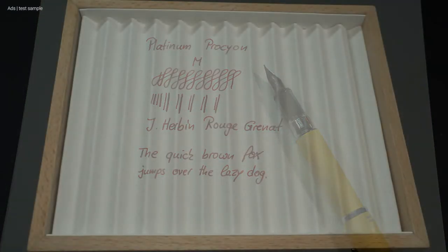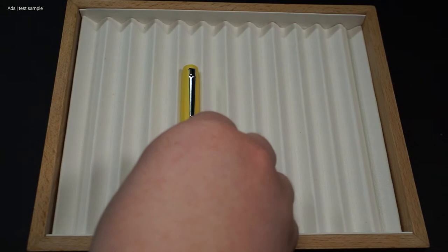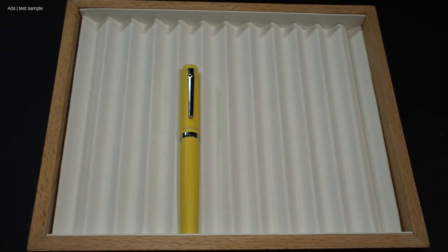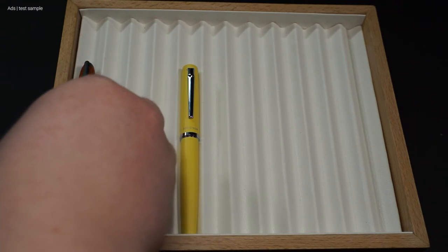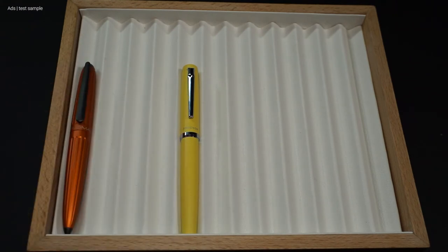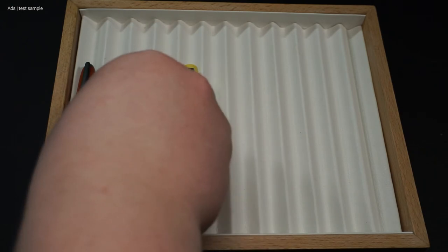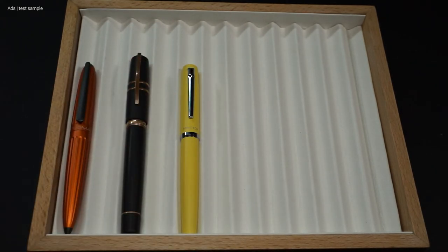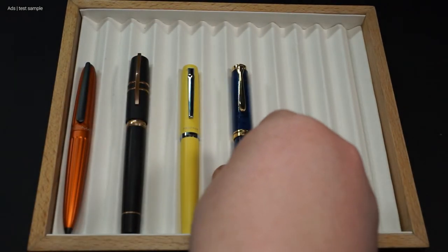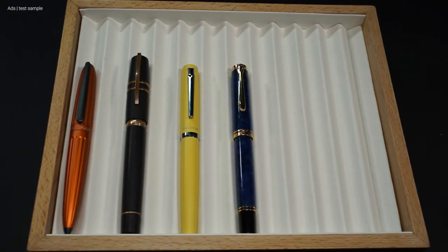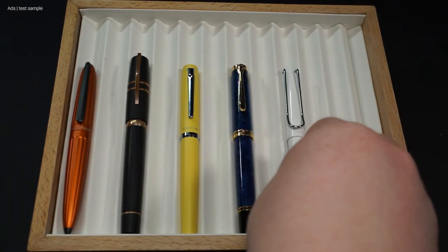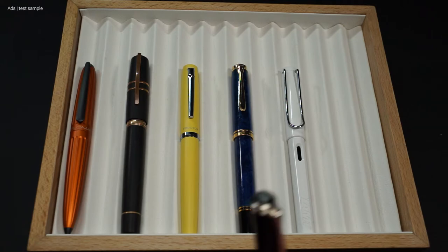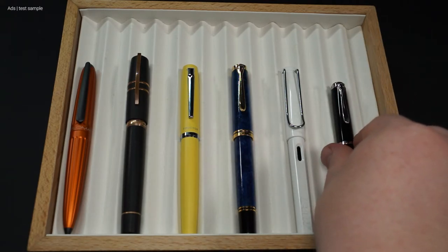Let's have a look at the size of the fountain pen. You can find the other data in the description as always. Here now in a comparison with a Diplomat Aero, a Visconti Homo Sapiens, a Pelican M800 Blue Blue, a Lamy Safari and a Pelican P205.